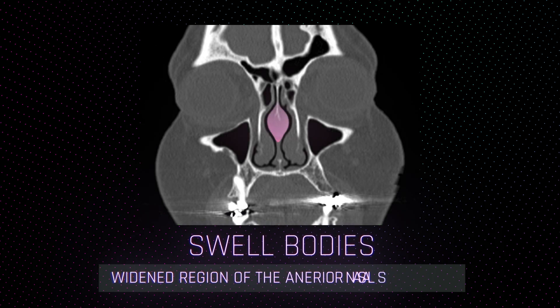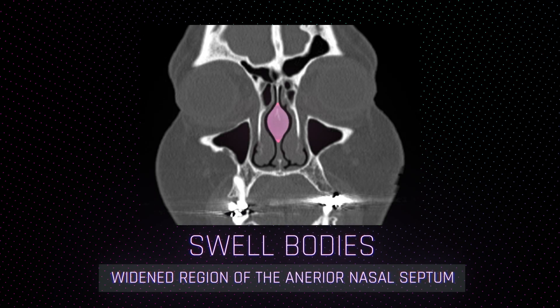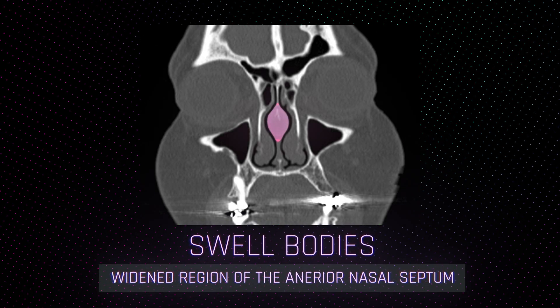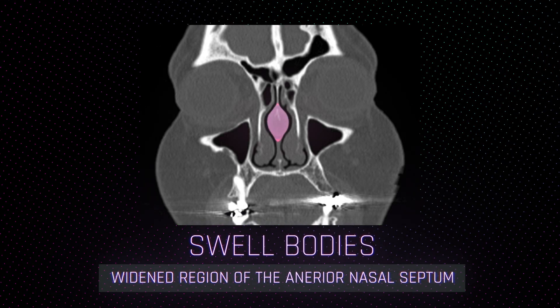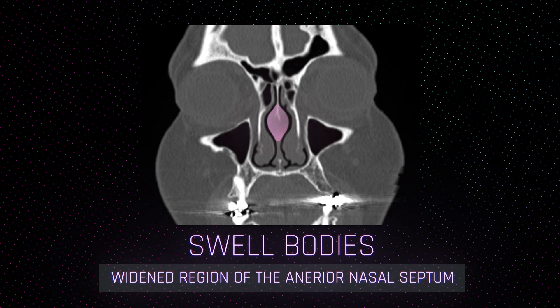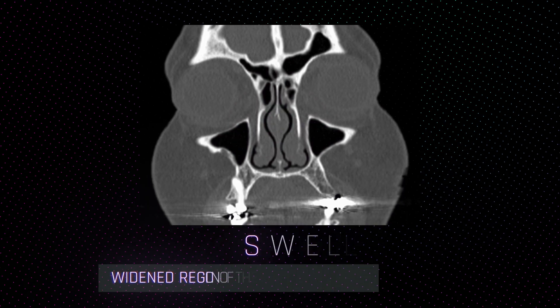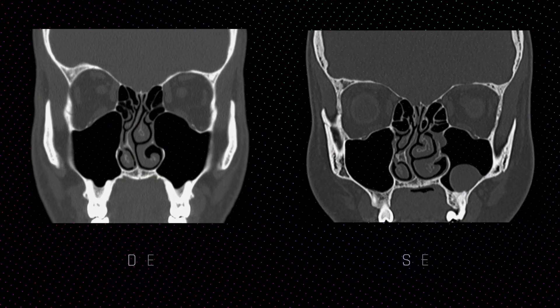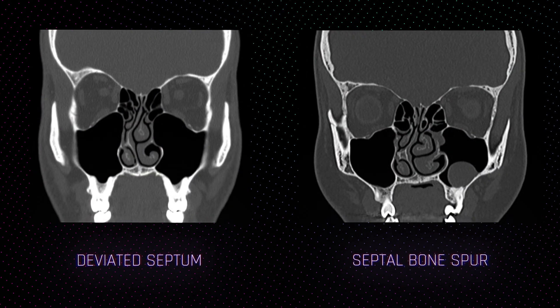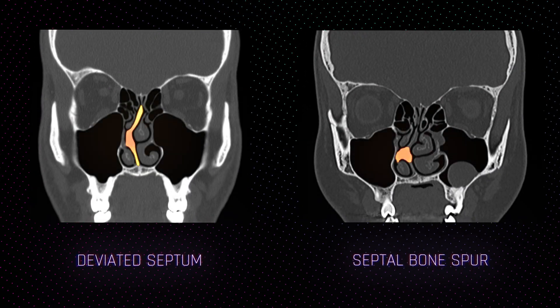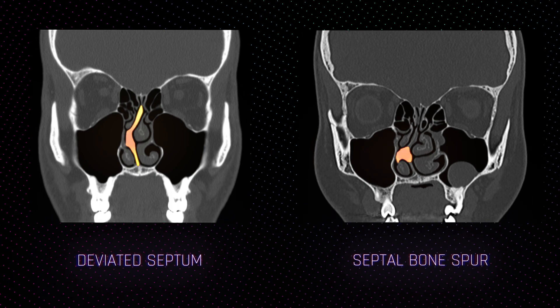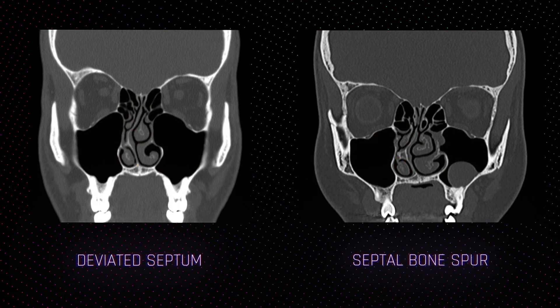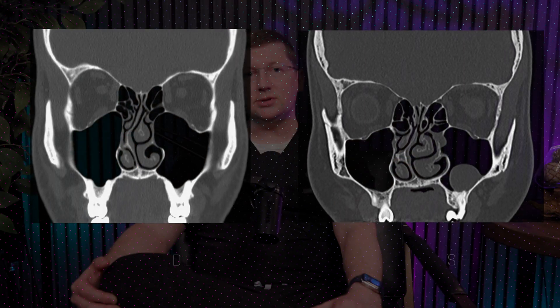Swell bodies near the front of the septum can enlarge on and off similar to nasal turbinates and may have a variable impact on nasal airflow, while the remainder of septal abnormalities such as deviations and spurs result in fixed or constant airflow obstructions.